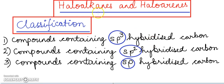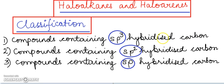We already know that haloalkanes are the halogen derivatives of aliphatic hydrocarbons and the haloarenes are the halogen derivatives of aromatic hydrocarbons. Now we are learning the classification of haloalkanes and haloarenes on the basis of the hybridized carbon present in the compound that attaches the halogen atom to the compound.